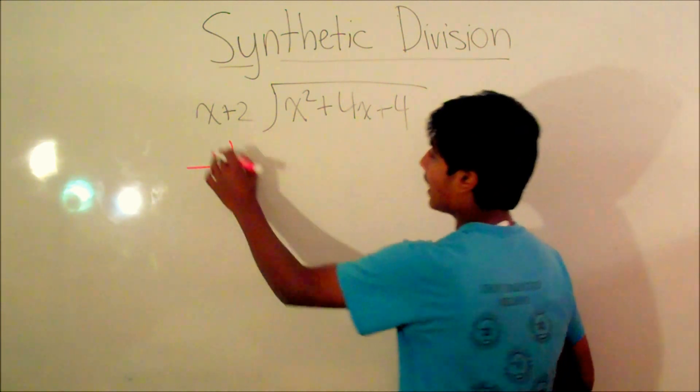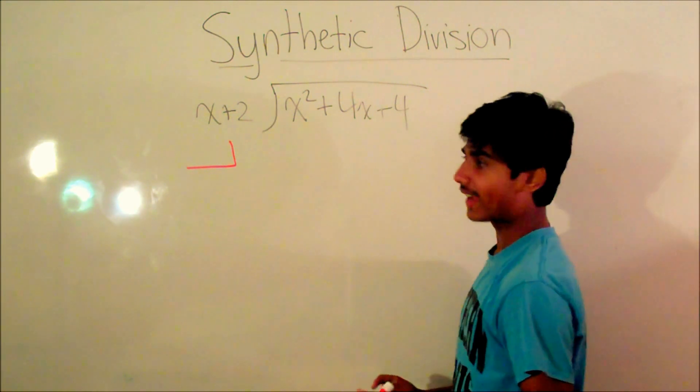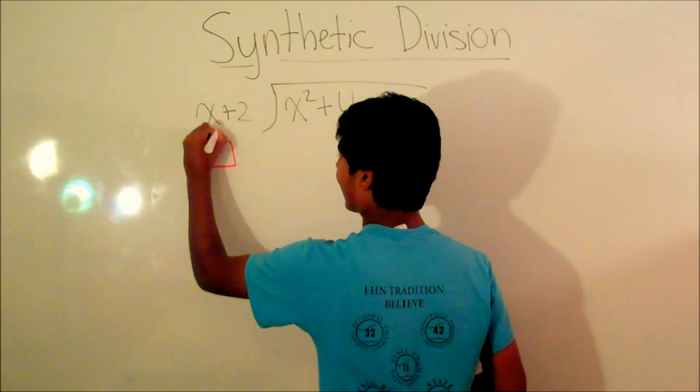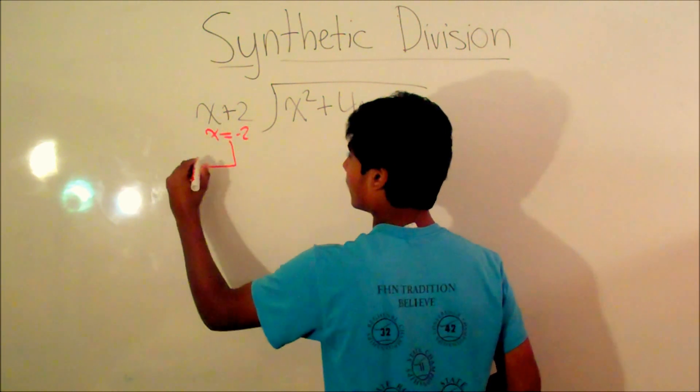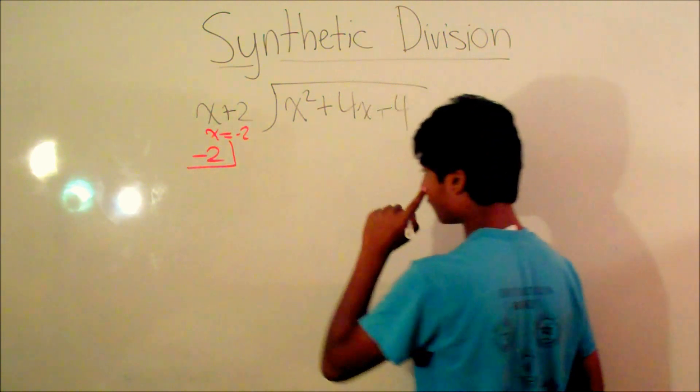So we have x plus 2 here. We have to solve for x, so we subtract 2 on both sides, and we get x is equal to negative 2. So our solution is negative 2.